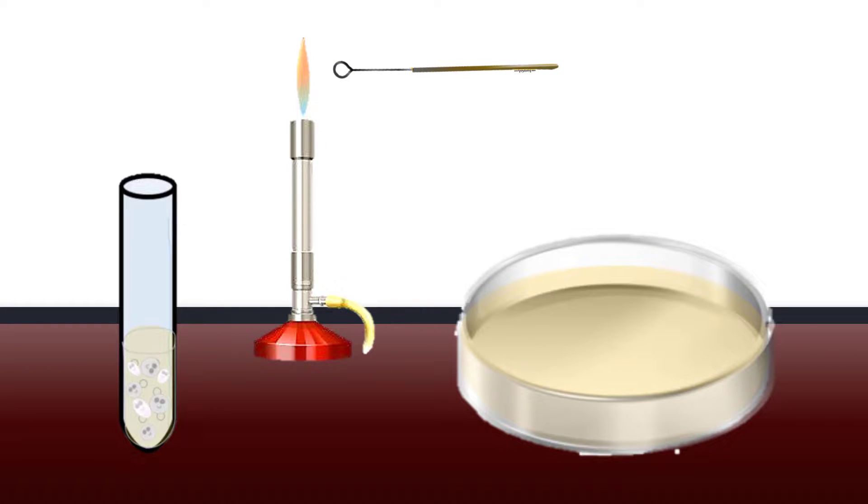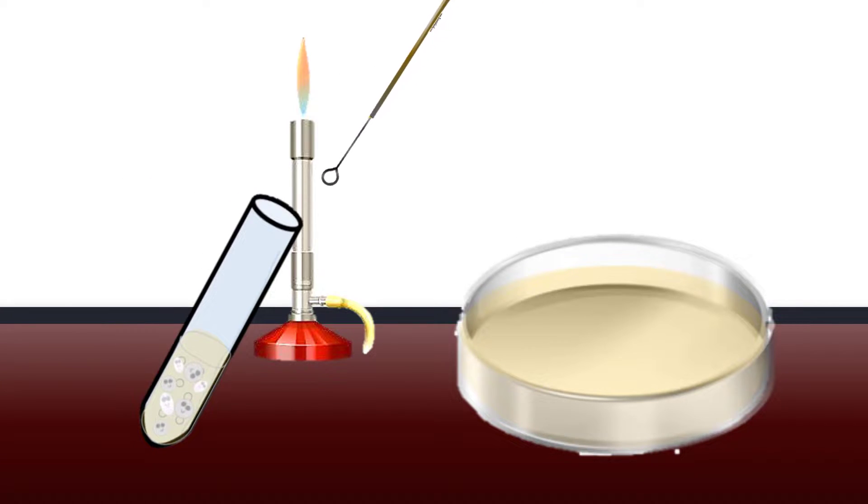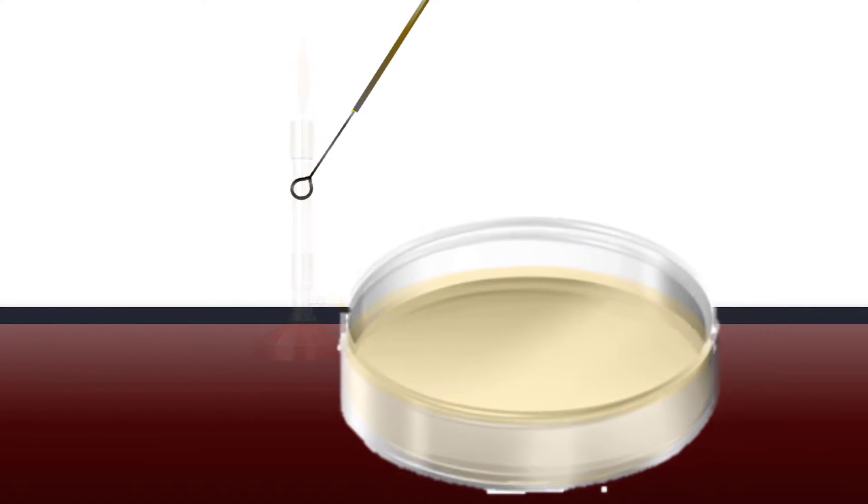Here is an example of the streak plate method. In this technique, a sterile inoculation loop is used to spread an inoculum across the surface of an agar plate.